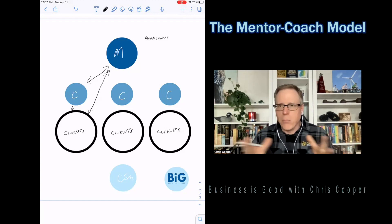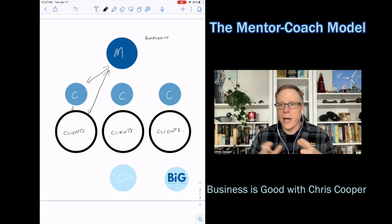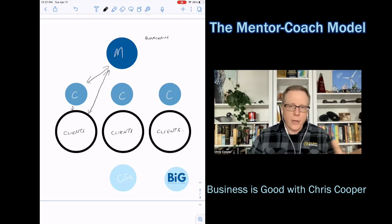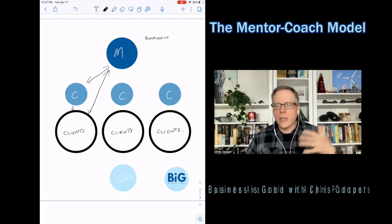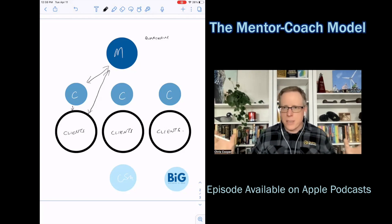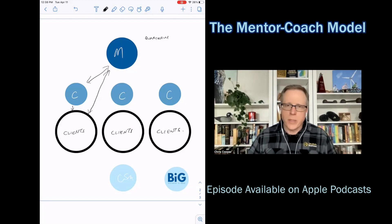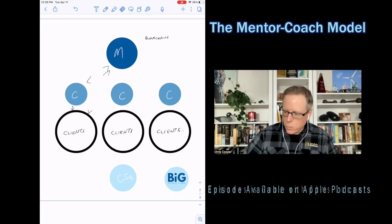Now, what this does is it multiplies the number of clients that the one individual mentor can serve by about three because they're not on like a monthly scheduled call with everybody or even a biweekly one. They're really on a one-on-one call every quarter. That means they can serve at least three, maybe four times as many clients because the coach is helping them.